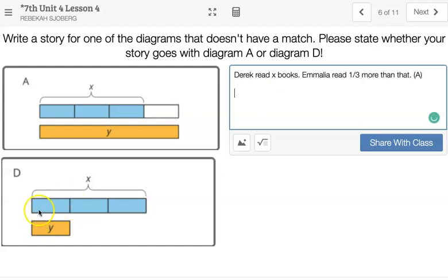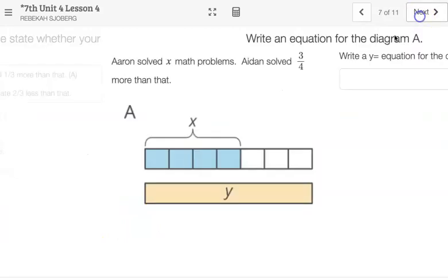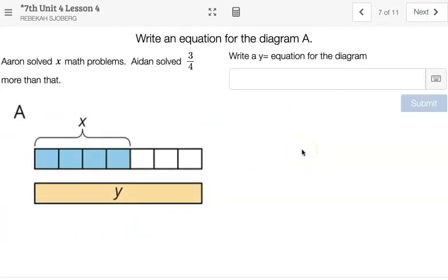I might also choose something for D. So here I might say something like, Matt ate X chocolates. Rebecca ate, I might say, 2 thirds less than that. I might also say ate 1 third of that. There's a lot of options here, but it's getting smaller than the original.